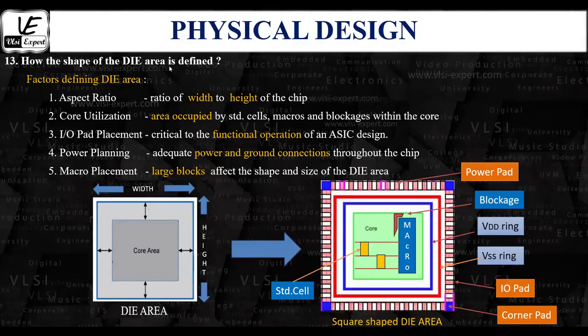How is the shape of the die area defined? In the context of physical design, the die area refers to the total area of the semiconductor material on which the circuit is fabricated. It is essentially the region that defines the size of the chip.